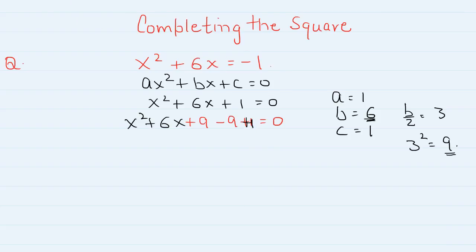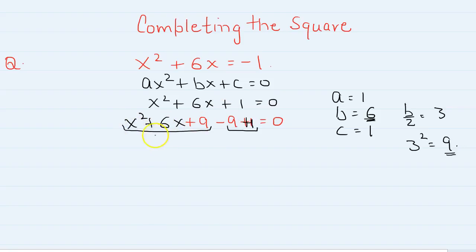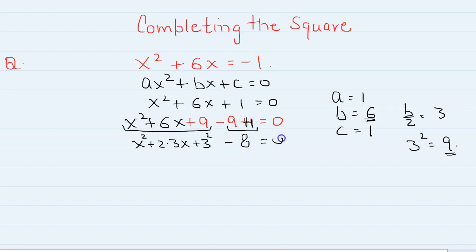Now we have to separate this into two groups. This is the most important part. x squared plus 6x plus 9 — this is x squared plus 2 times 3x plus 3 squared. Minus 9 plus 1 is minus 8, is equal to 0.